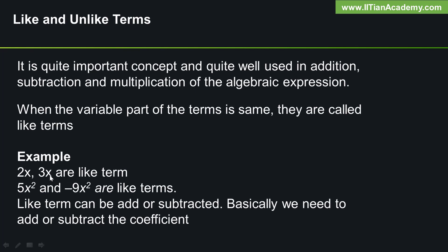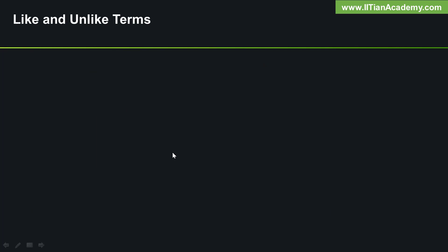Like and unlike terms is quite an important concept, well used in addition, subtraction, and multiplication of algebraic expressions. When the variable part of the terms is the same, they are called like terms. Like terms can be added or subtracted — basically we need to add or subtract the coefficients. When the variable part of the terms is not the same, they are called unlike terms.